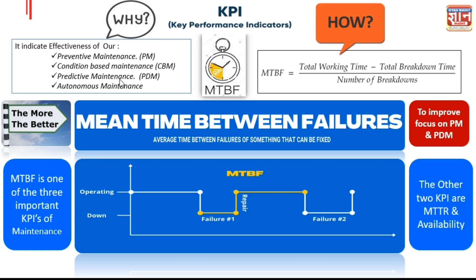Basically, the higher your MTBF, the better your performance. What it indicates is how well your preventive maintenance is, how well your condition-based maintenance is, how well your predictive maintenance is, and how well you are doing autonomous maintenance. How you calculate it is: total working time minus breakdown time, divided by number of breakdowns. You can calculate this with a pivot table — I will show you that demo also.